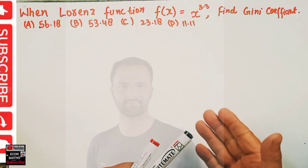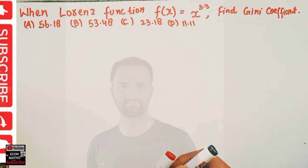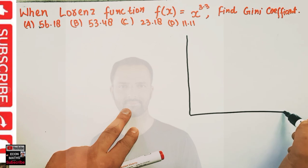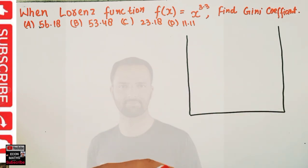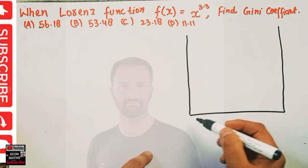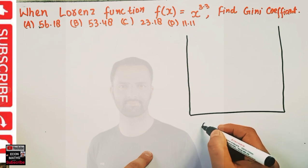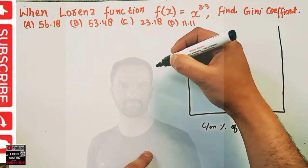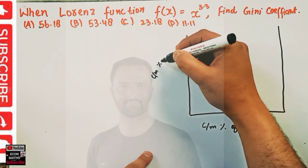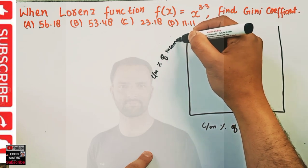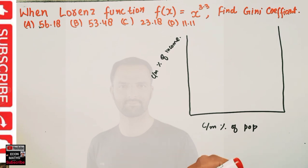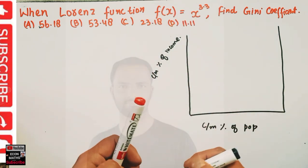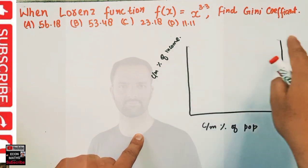Let's first try to solve this question and then I will explain how we calculate the Gini coefficient. We have a function, so let me draw the graph. On the x-axis we have cumulative percent of population, and on the y-axis we have cumulative percent of income. Our Lorenz function is f(x) = x to the power 3.3.